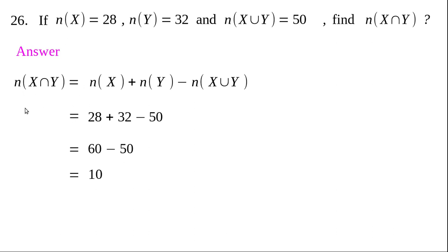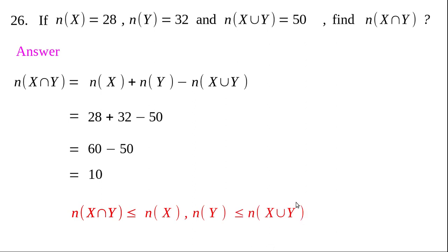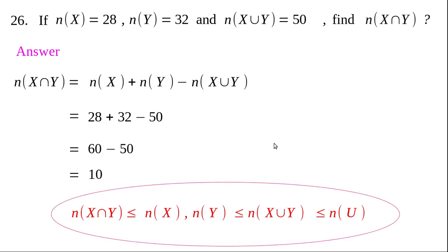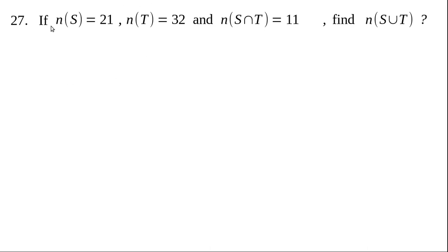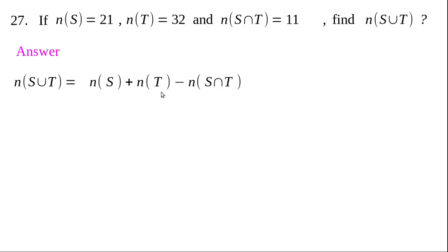Note that among n(X∩Y), n(X), n(Y), and n(X∪Y), the smallest number is n(X∩Y), followed by n(X) and n(Y), then n(X∪Y), and the largest is n(U). This is the order of inclusion. Keep this in mind. Question 27 is also simple — n(S), n(T), and n(S∩T) are given; find n(S∪T). Using the formula n(S∪T) = n(S) + n(T) - n(S∩T) and replacing the numbers, the answer is 42.